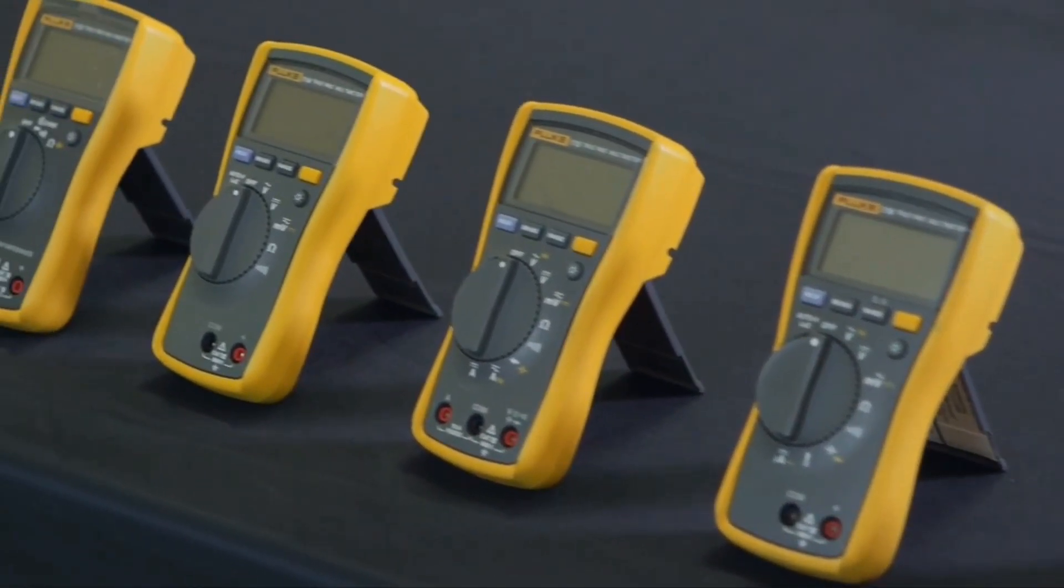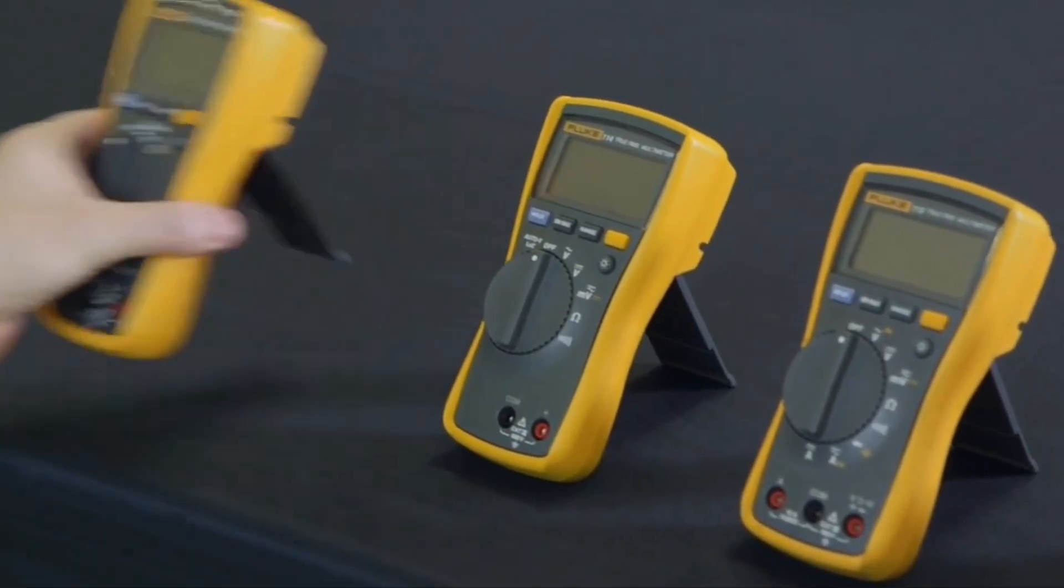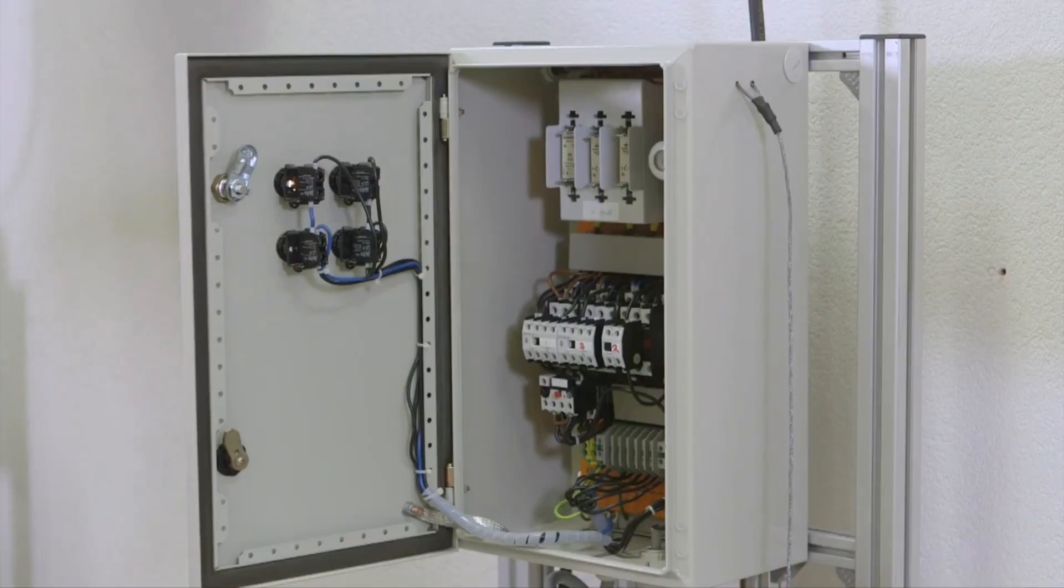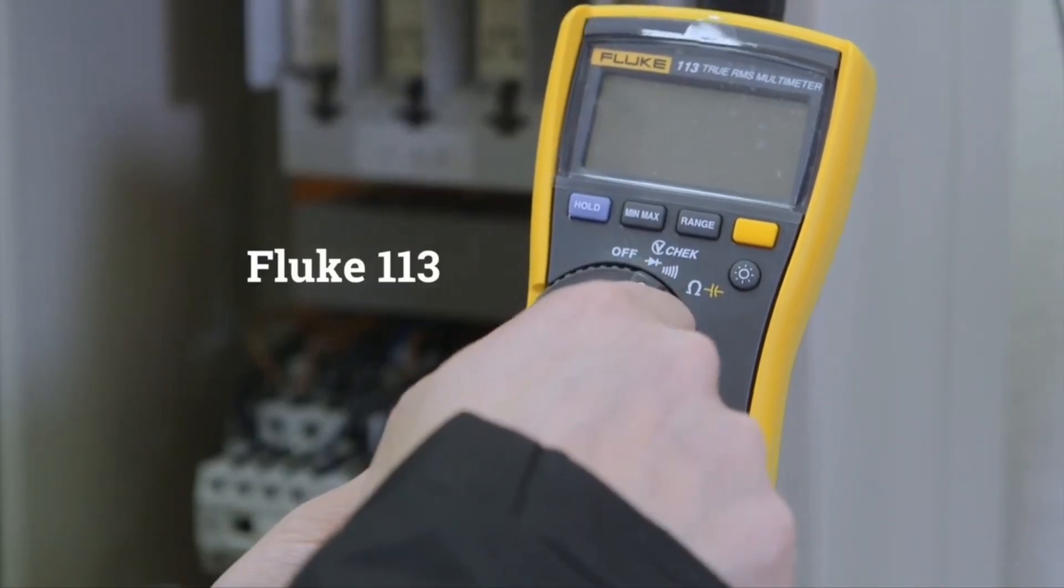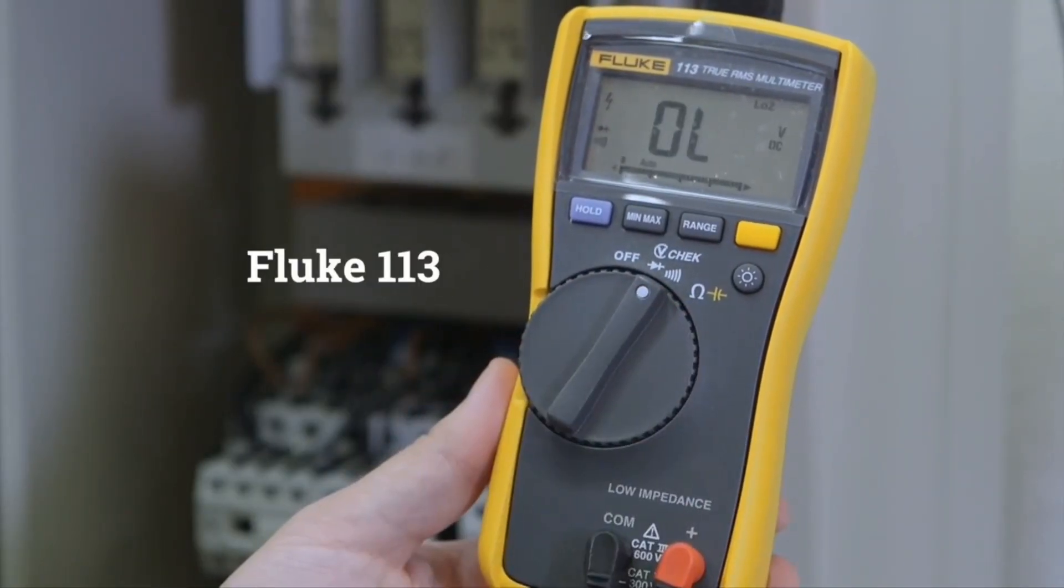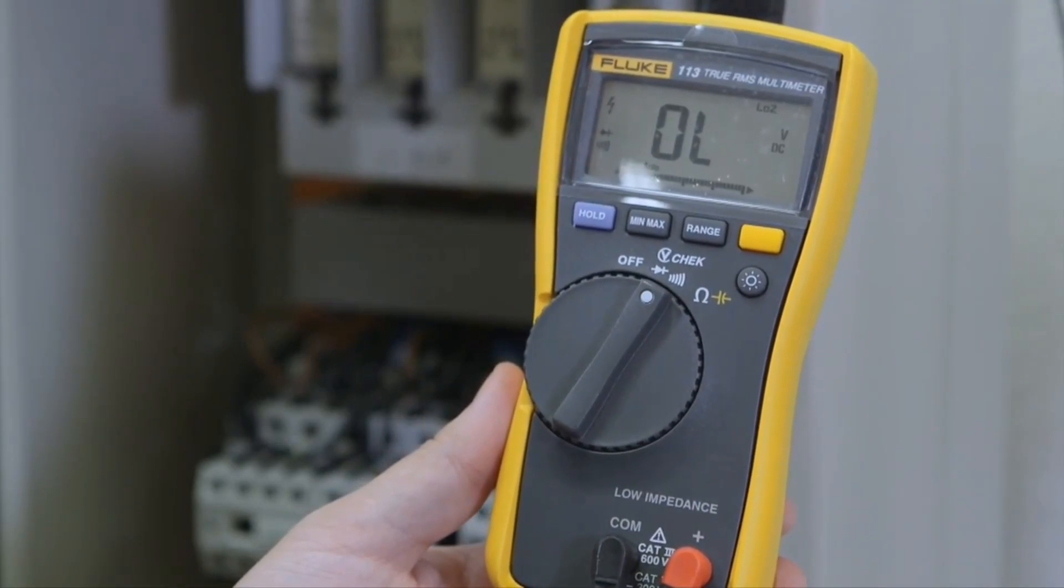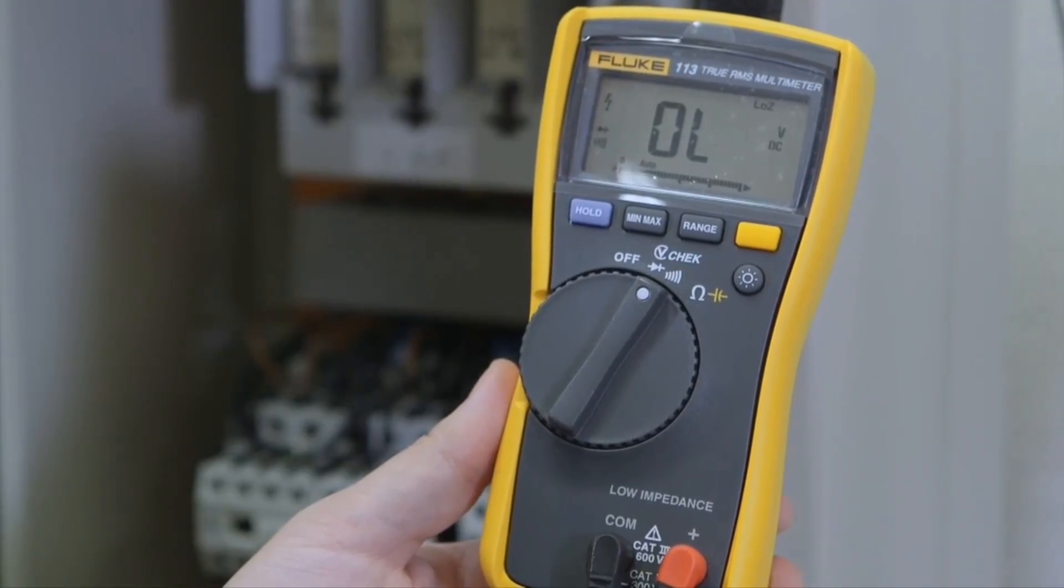For CAT 3 environments, we recommend a digital multimeter in the 110 series. The Fluke 113 offers the possibility to perform basic measurements and connection tests in a fast and easy way. Its V-check function lets you test voltage and continuity at the same time.